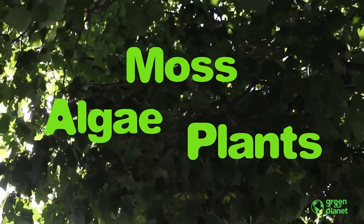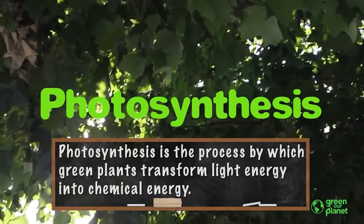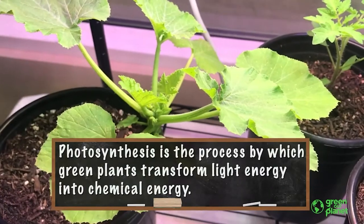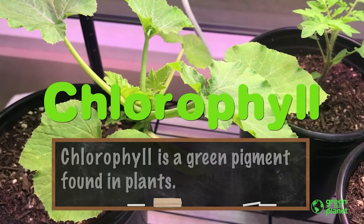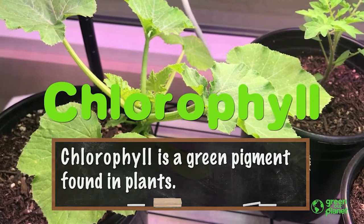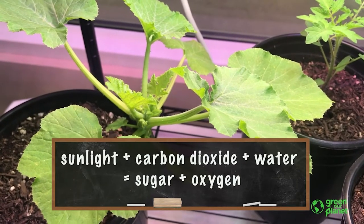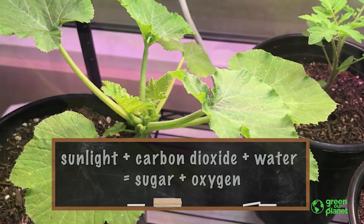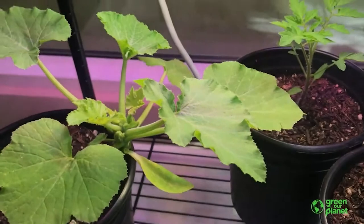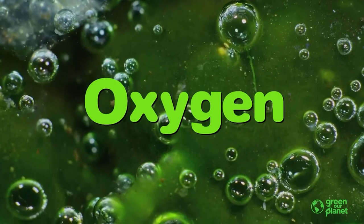For millions of years, algae, moss, and plants have all used the same chemical process that we call photosynthesis. For this process, algae, moss, and plants all use the same pigment that we call chlorophyll. Chlorophyll helps capture photons of light from the sun, or it could be from another light source, and along with carbon dioxide and water, the plant, algae, or moss can create sugars that it uses to build and grow or to feed and sustain itself. A byproduct of this process is oxygen that we all breathe here in the atmosphere.